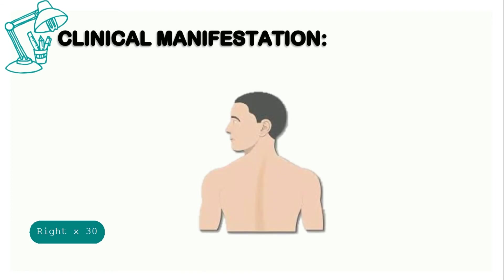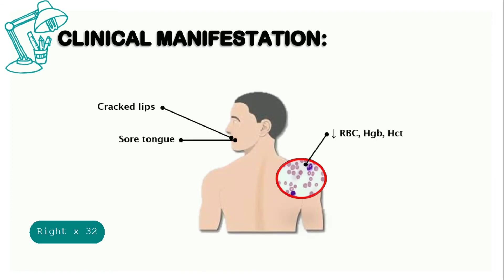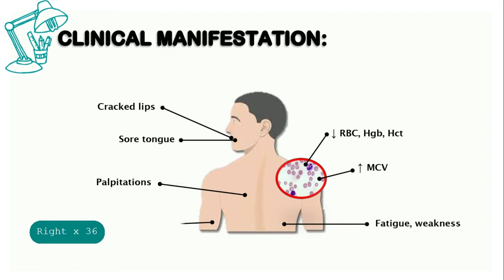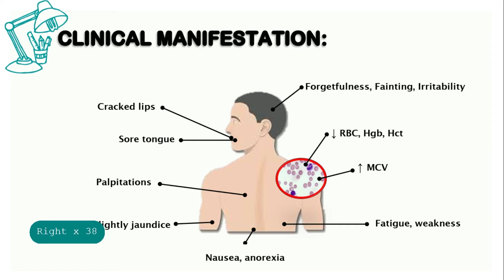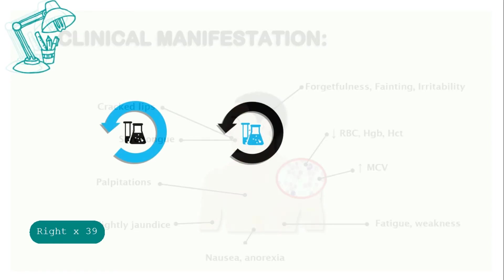The clinical manifestations are cracked lips, sore tongue, decreased RBC, hemoglobin, and hematocrit, increased MCV, palpitation, fatigue and weakness, pallor and slightly jaundiced appearance, forgetfulness, fainting, irritability, and nausea and anorexia.